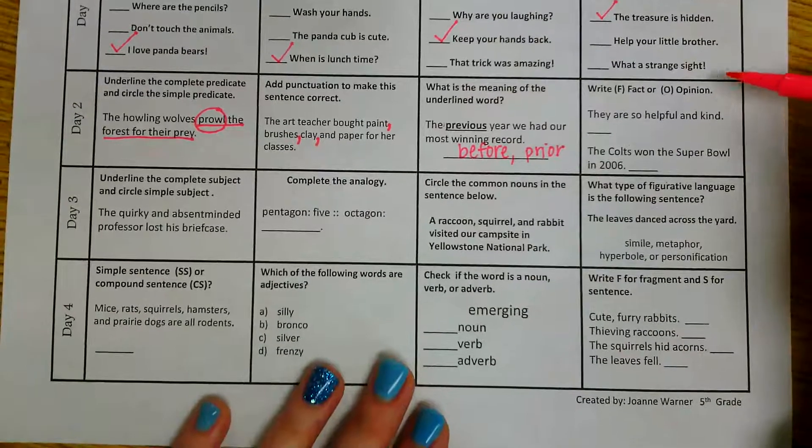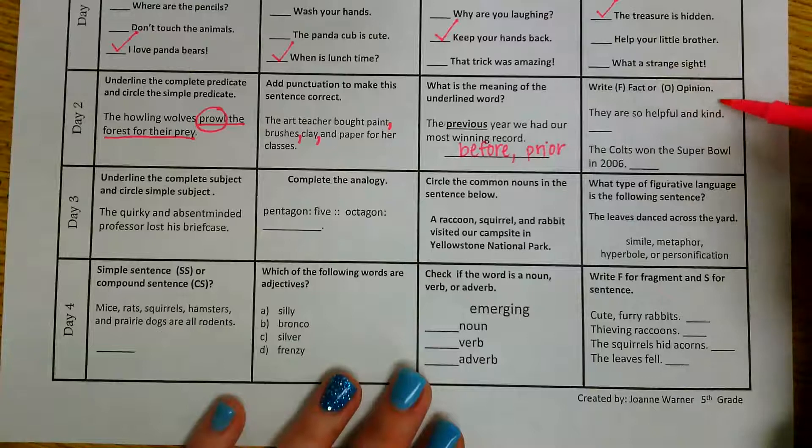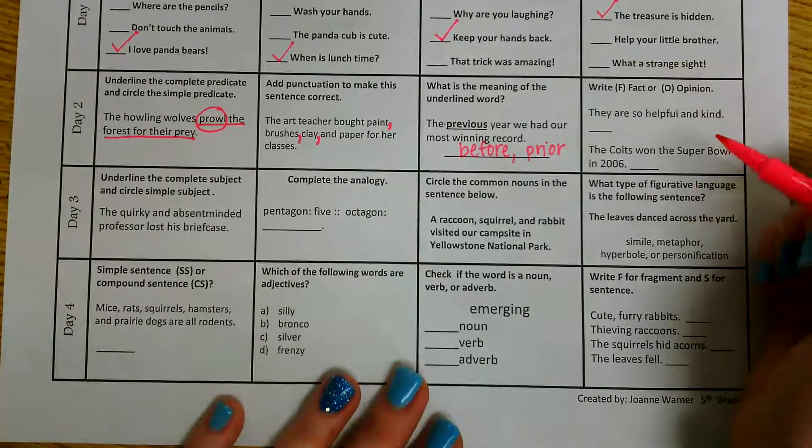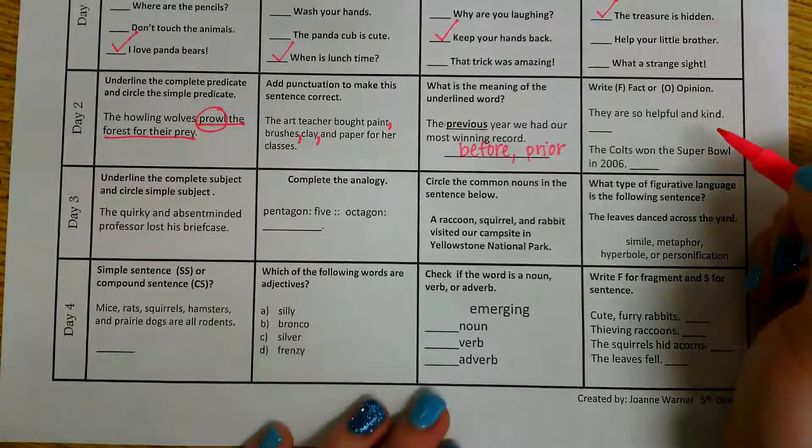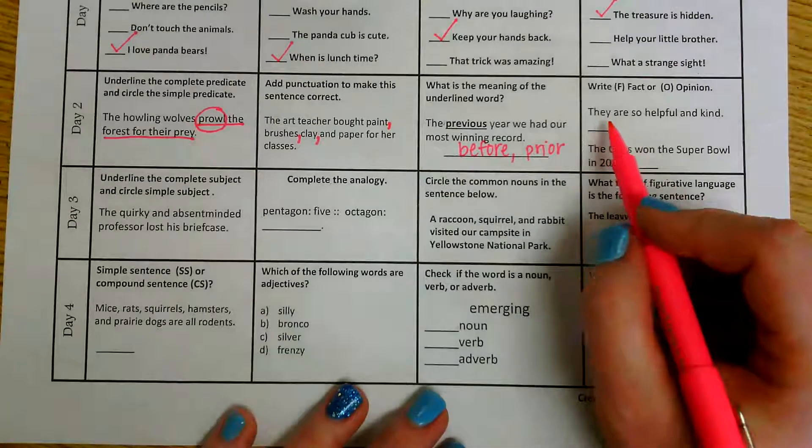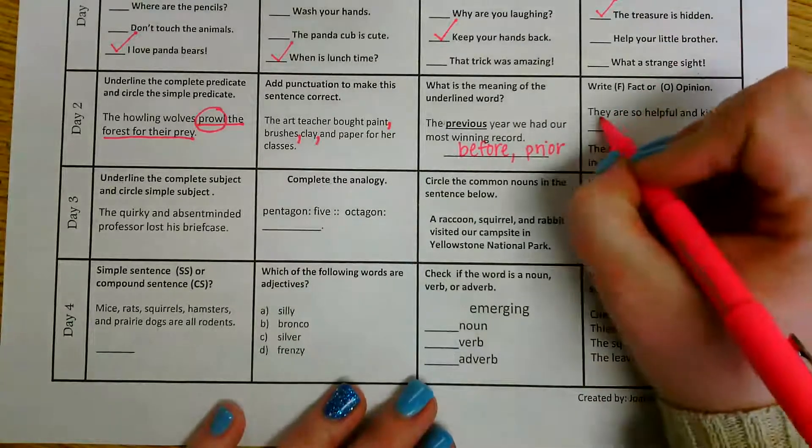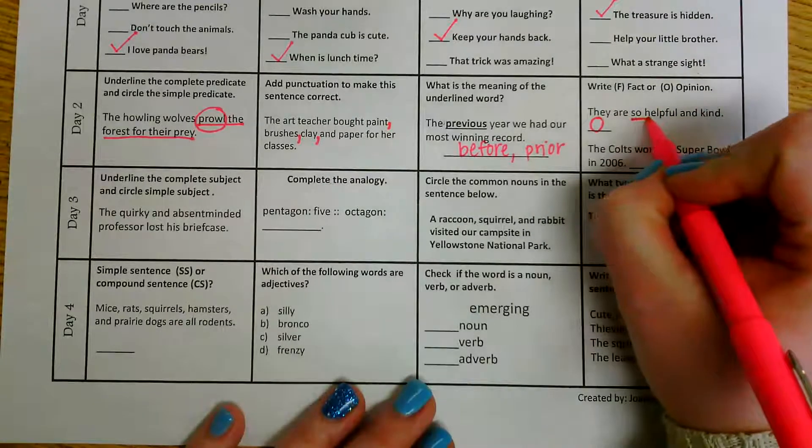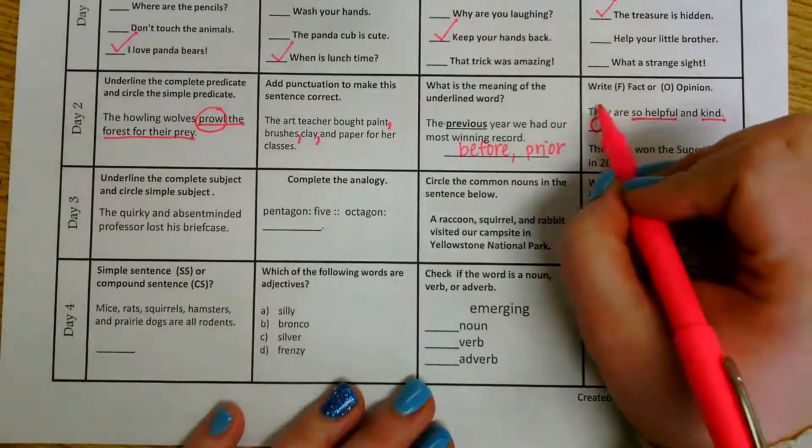In the last one for day two, we are determining if our statements are facts or opinions. Remember, with a fact, we are making a true statement. We're just giving information. An opinion is how you feel about something. So the first one says they are so helpful and kind. Well, I know that this is going to be an opinion. And the reason for that is because I am using the word so helpful and kind. So this is how I feel about them.